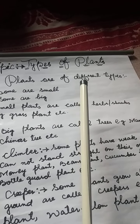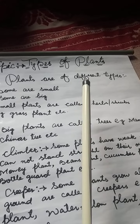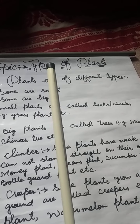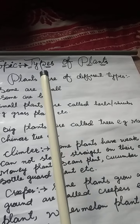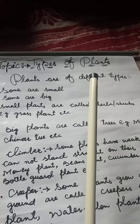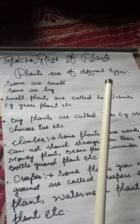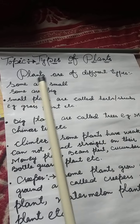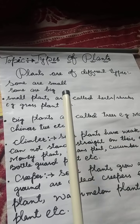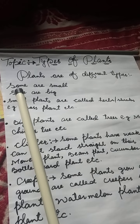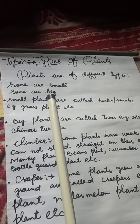Types of plants means poudun ki kisme. Plants are of different types. Some are small, some are big. Kuch plants chote hoté hain, kuch plants bade hoté hain.